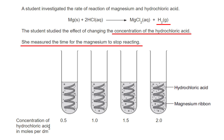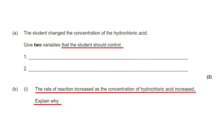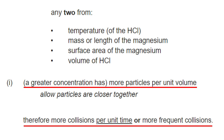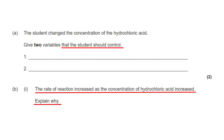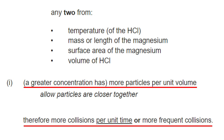Here's a real-life exam question. A student studies the effect of changing the concentration of hydrochloric acid, increasing it from 0.5 molar to 2 molar. Pay attention to the magnesium ribbon — they're identical: same surface area, same length, same size, and temperature is kept the same. Two variables she should control: temperature and the length/surface area of the magnesium. The rate of reaction increases as the concentration increases — more particles per unit volume, so more collisions per unit time.